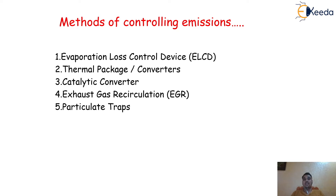This is done with the help of emission controlling devices. There are different methods to control the emissions in the case of spark ignition engine and in the case of compression ignition engine. Here we have the different methods which can control the engine emission.